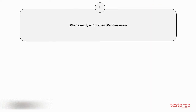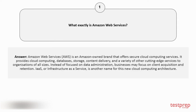Question number 1: What exactly is Amazon Web Services? Amazon Web Services is an Amazon-owned brand that offers secure cloud computing services. It provides cloud computing, databases, storage, content delivery, and a variety of other cutting-edge services to organizations of all sizes. Instead of focusing on data administration, businesses may focus on client acquisition and retention. IaaS, or Infrastructure as a Service, is another name for this new cloud computing architecture.